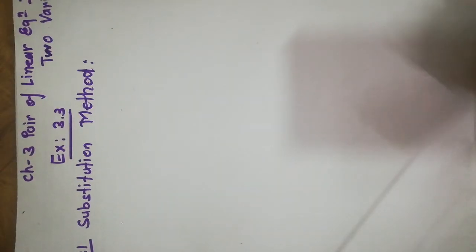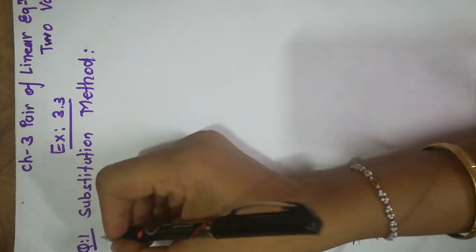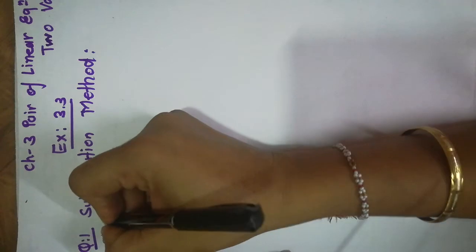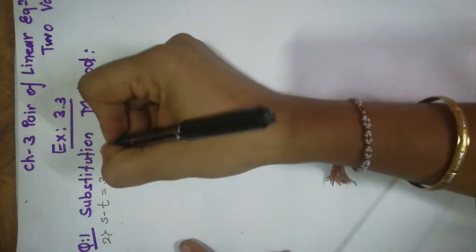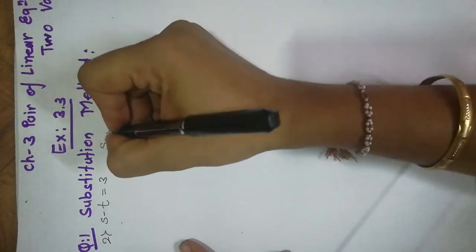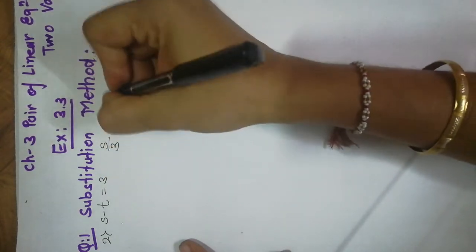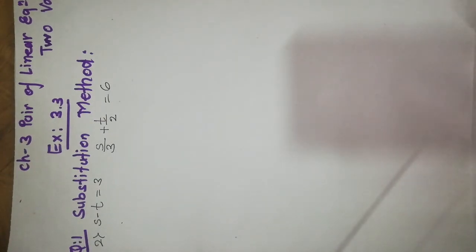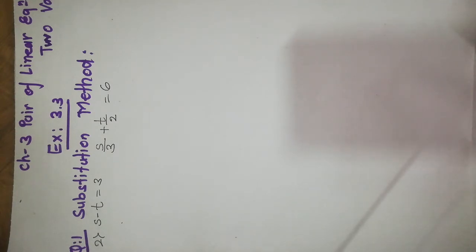In this question we have 4 or 6 sub questions. Out of them we solve some of them. Let's check out the second one. We have two equations given: s minus t is equal to 3, and s by 3 plus t by 2 is equal to 6. First of all we have to convert the equations in the general formula — that means ax plus by plus c1 is equal to 0, and a2x plus b2y plus c2 is equal to 0.